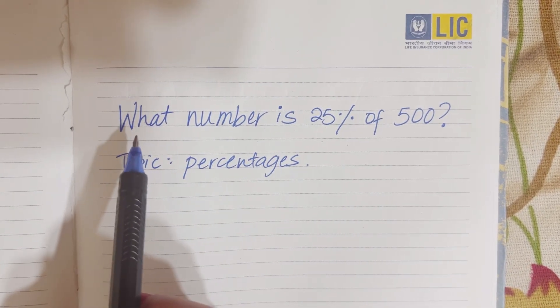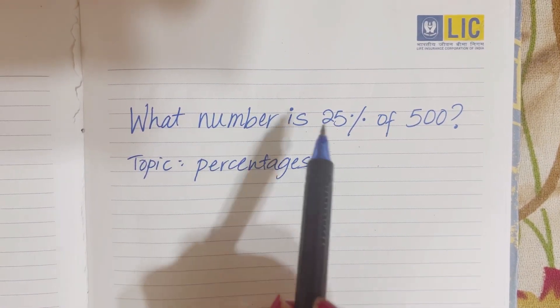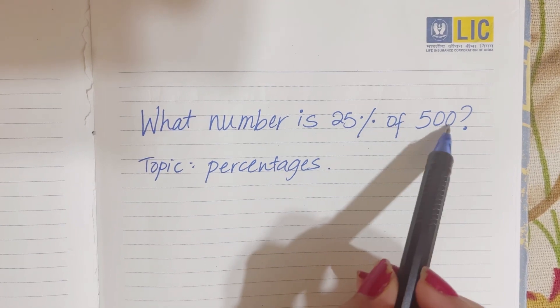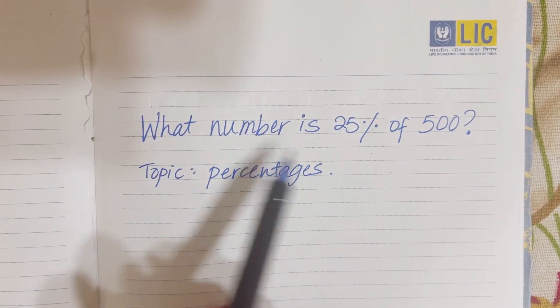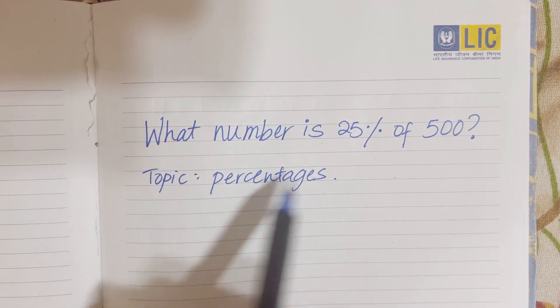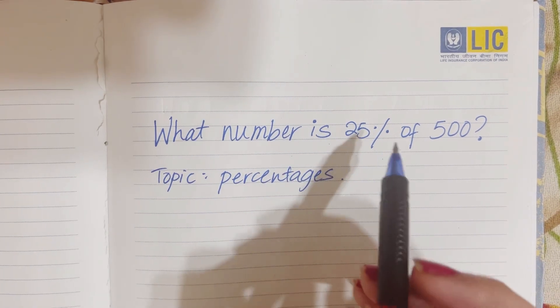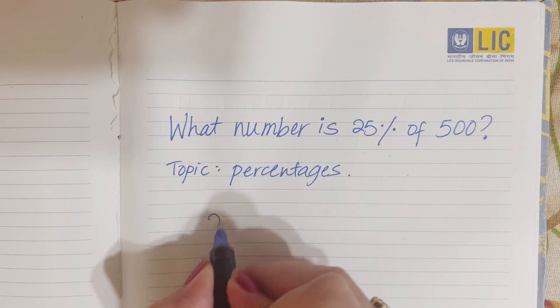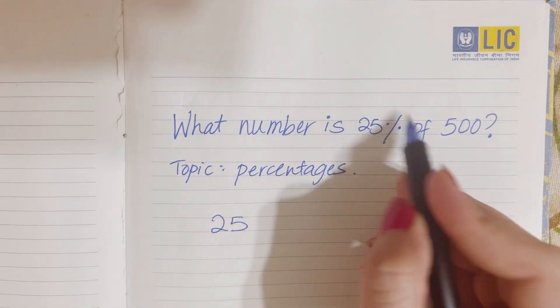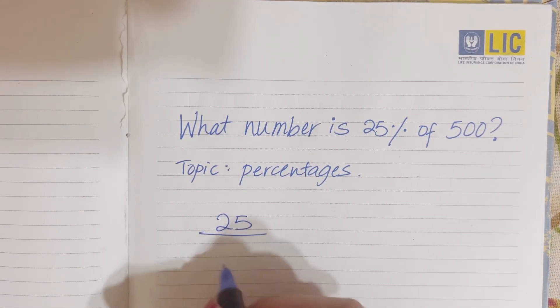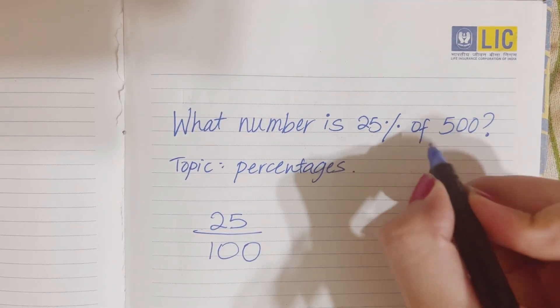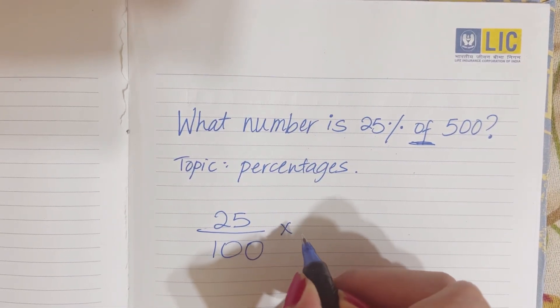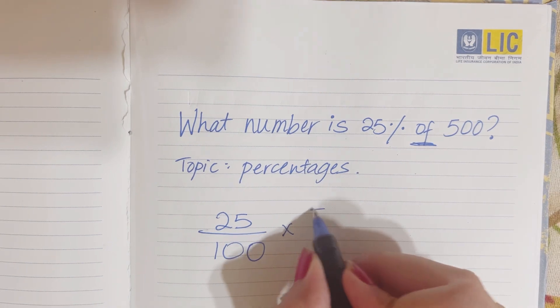Okay, so the first question says one number is 25% of 500. The topic you want to review for this problem is percentages. To solve this problem, you're going to do 25% - percent means divided by 100, and of means multiplication - times 500.